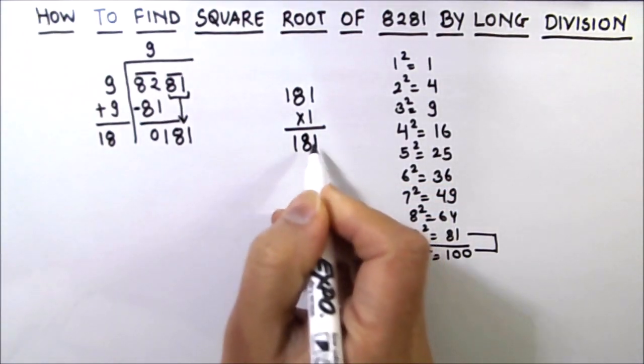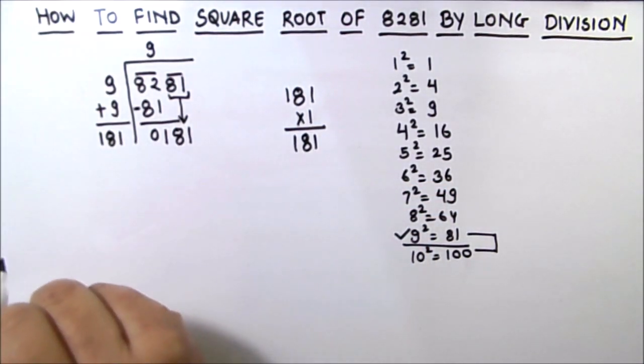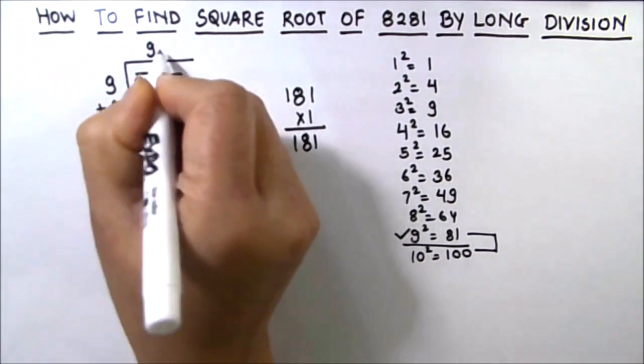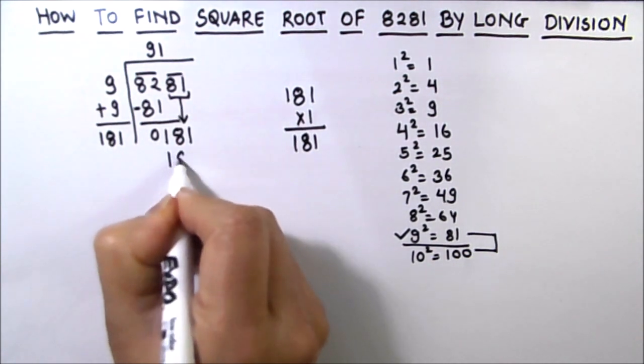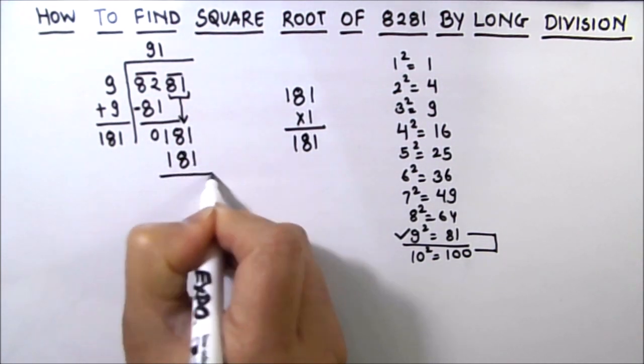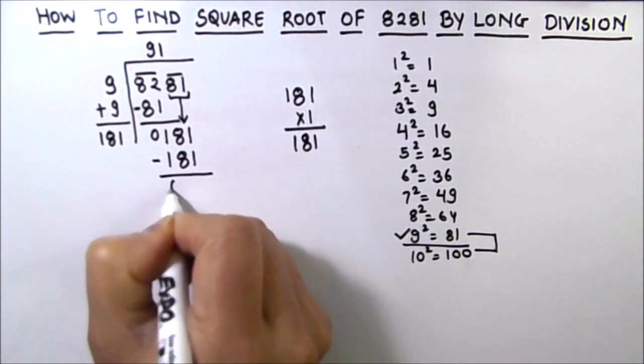So we can use 1 as our annex digit and 1 as our quotient. So 181 times 1 is 181, and we will subtract the two numbers.